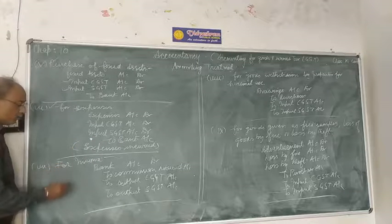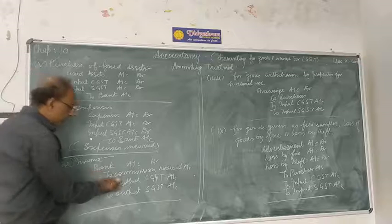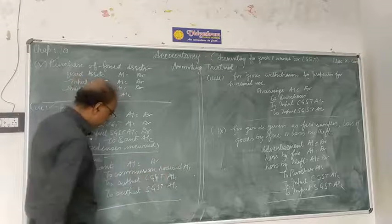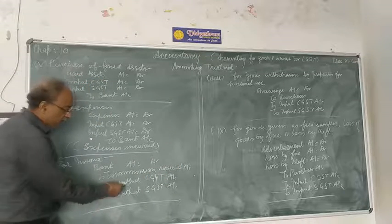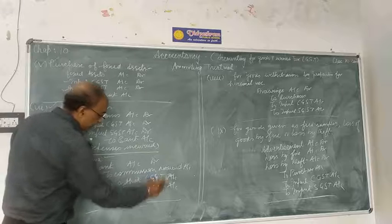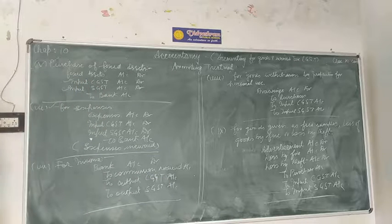Now for income, what should we do? For income, bank account is debited to commission received, which is a type of income, and to output CGST and output SGST. Now this is how you will typically do all entries over here.